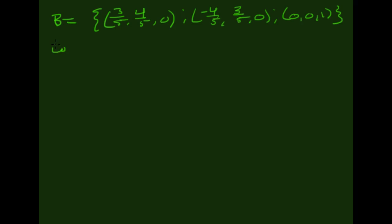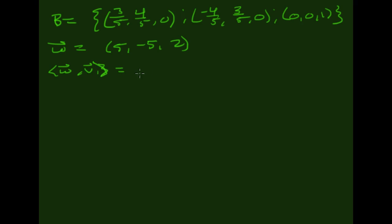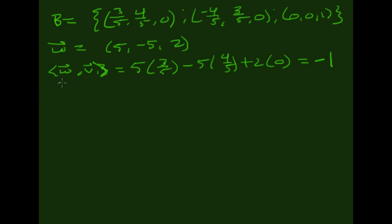So let's take our vector W and let it be (5, −5, 2). Then we're going to take ⟨W, V1⟩ — the dot product of these two — which is 5 times 3/5 minus 5 times 4/5 plus 2 times 0, which is 3 minus 4, equal to negative 1.